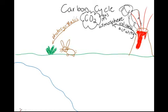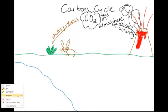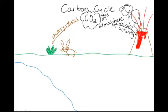Carbon is going to move from our producers to our consumers when they eat the plants. We're going to follow that pathway and label it 'eat' — consumers eat the producers.